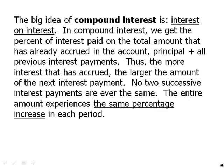The big idea of compound interest is interest on interest. In compound interest, we get the percent of interest paid on the total amount that has already accrued in the account — principal plus all previous interest payments. Thus, the more interest that has accrued, the larger the amount of the next interest payment. No two successive interest payments are ever the same.